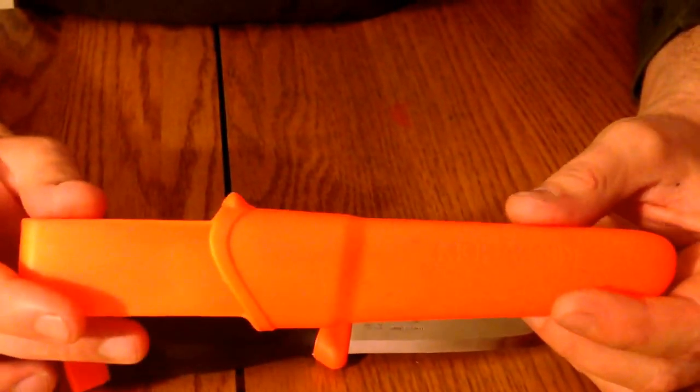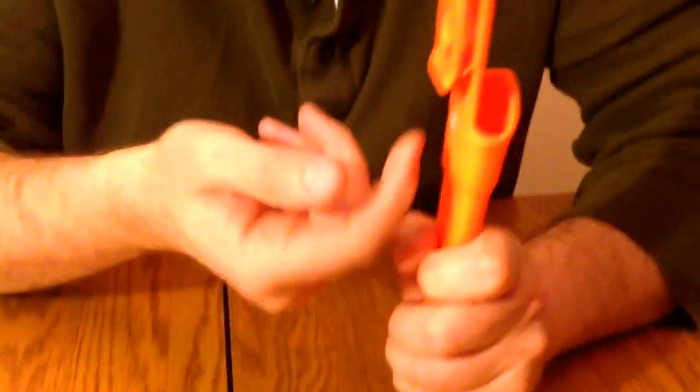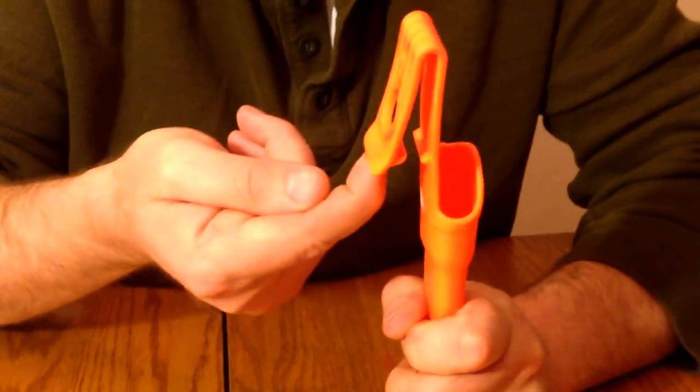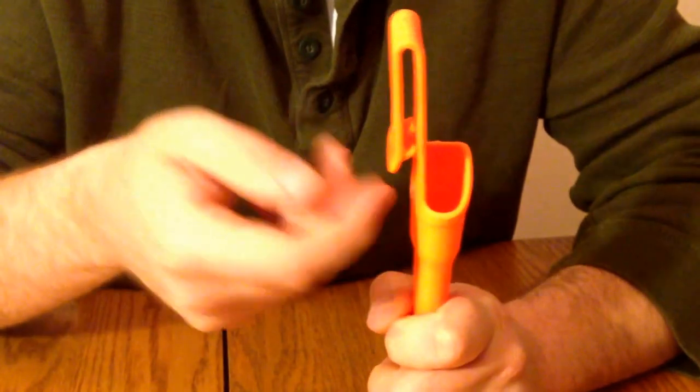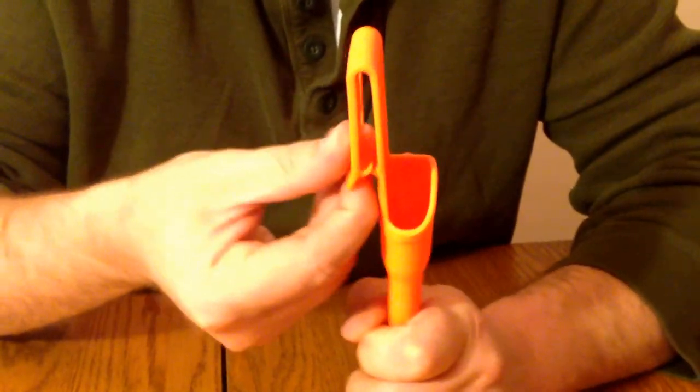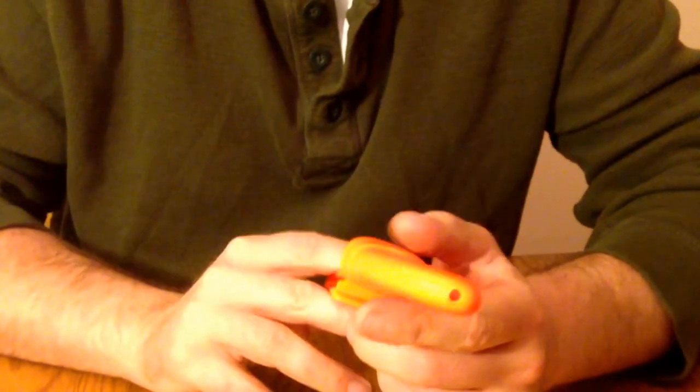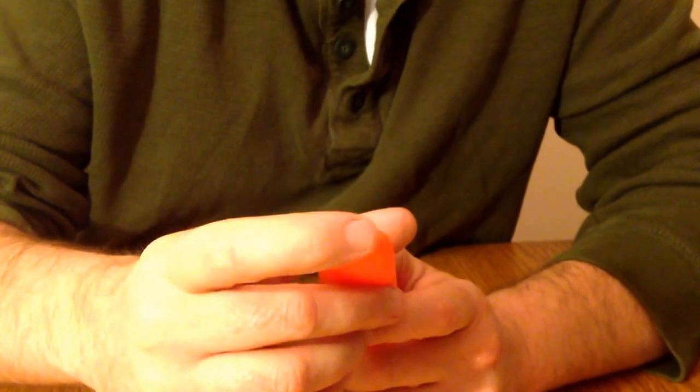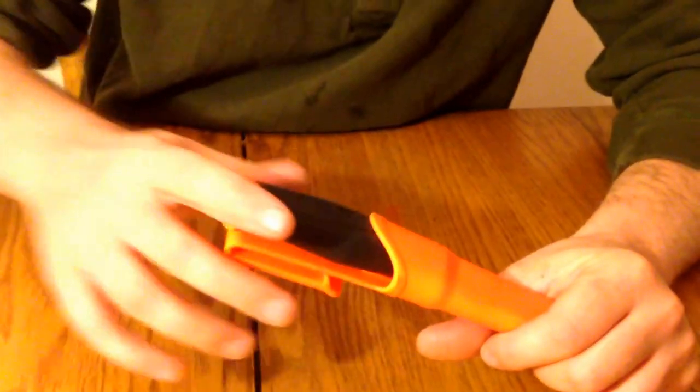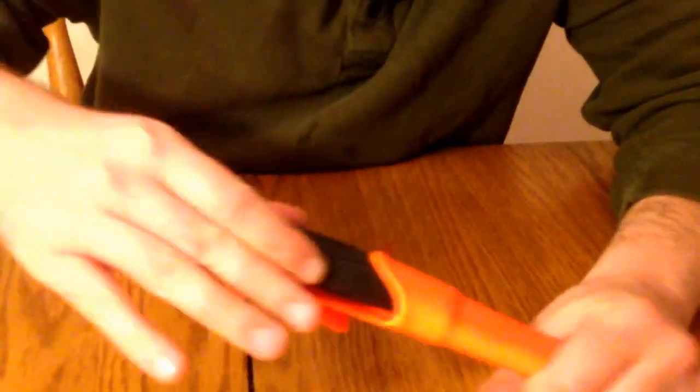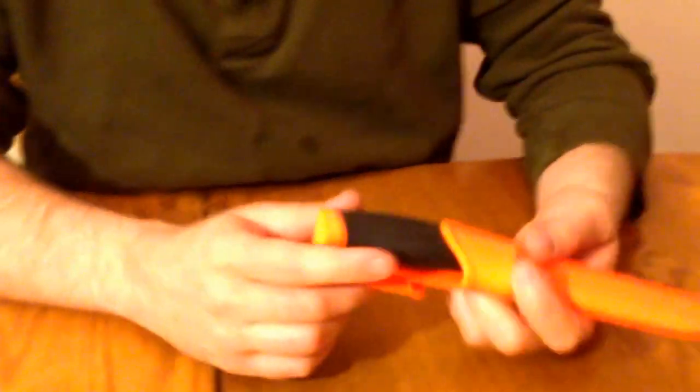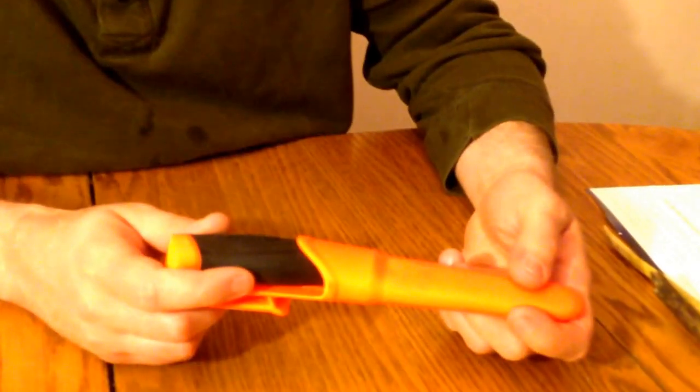The sheath is an orange thermoplastic molded sheath. It has a belt loop here where you can hook this to your belt, which is kind of nice so you don't have to actually loop your belt through there. It has a drain hole in the bottom for water to drain out. And it fits very nicely with the knife. It snaps into place and it doesn't rattle or anything. It stays in there pretty tight.